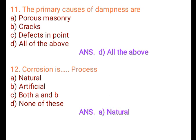Question 12: Corrosion is a natural process. A. Natural, B. Artificial, C. Both A and B, D. None of these. Answer: A. Natural.